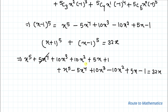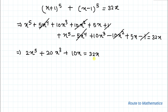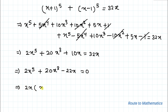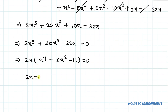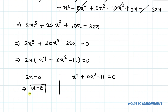After adding, the ±5x^4 terms cancel and the ±10x^2 and constant terms cancel, leaving: 2x^5 + 20x^3 + 10x = 32x. Moving 32x to the left: 2x^5 + 20x^3 - 22x = 0. Taking 2x common: 2x(x^4 + 10x^2 - 11) = 0. So x = 0 is one solution, and we also solve x^4 + 10x^2 - 11 = 0.